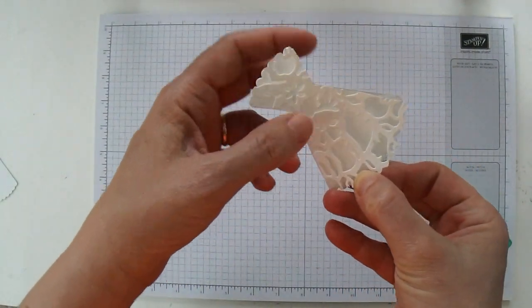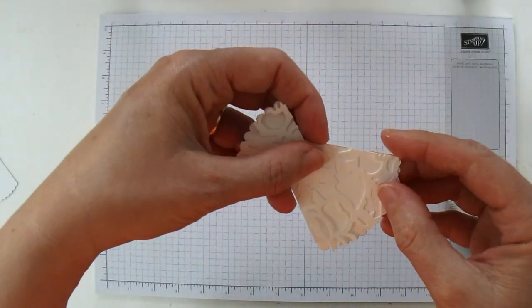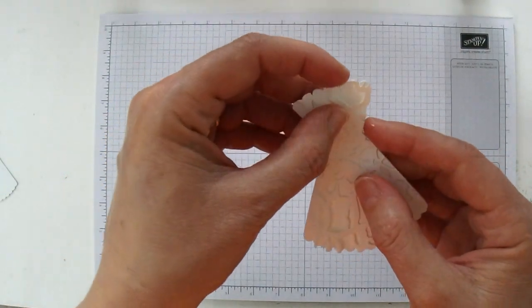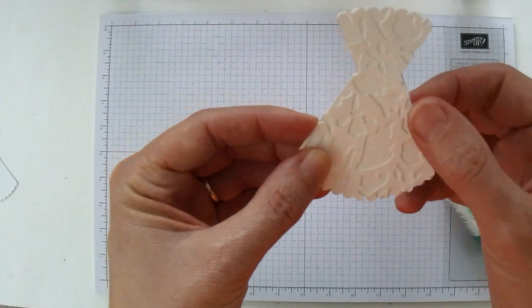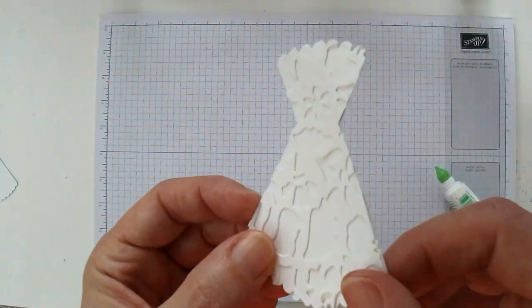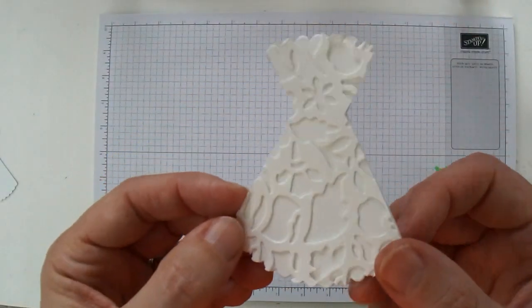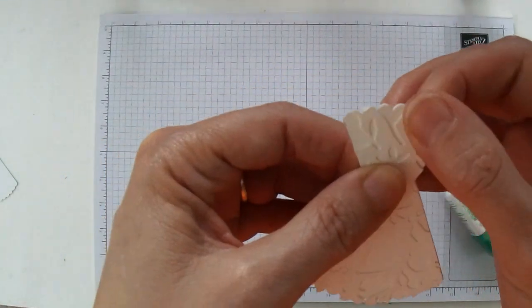But once you add the backing onto it, it kind of makes the dress look a bit like a brocade dress. That is very pretty. So that makes up a really pretty looking wedding dress.